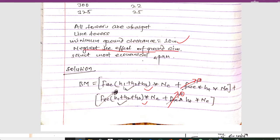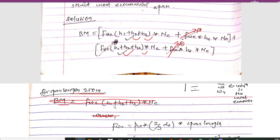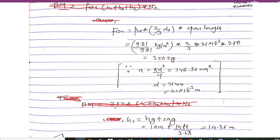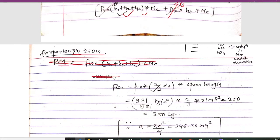The bending moment formula is: Fwc × (h1 + h2 + h3) × nc + Fwe × ht × ne + Ftc × (h1 + h2 + h3) × nc + Fte × ht × ne. Since we neglect the effect of ground wires, the Fwe and Fte terms become zero, and we consider only the Fwc and Ftc terms.